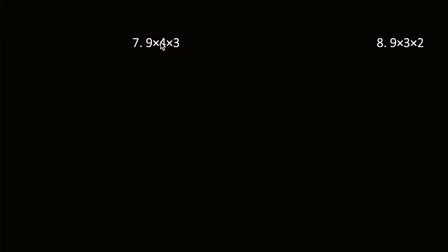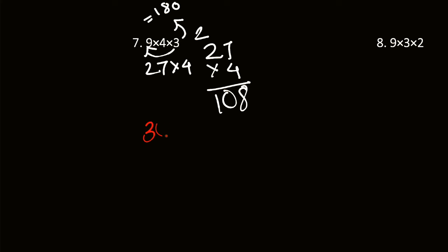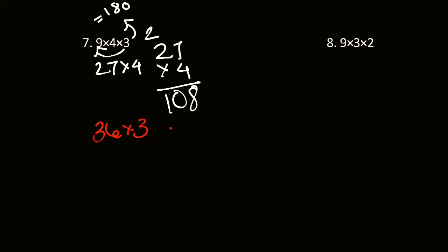Here's our next one: 9 times 4 times 3. Let's do 9 and 3, which is equal to 27. Then 27 times 4 — since it's a bigger number, I'll multiply it out: 7 times 4 is 28, carry the 2. 2 times 4 is 8, plus 2 is 10. So we get 108. You could also do 4 times 3, which is 12, and then 12 times 9, which would probably be easier overall.